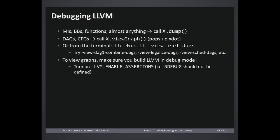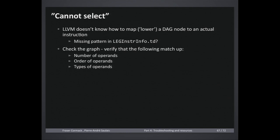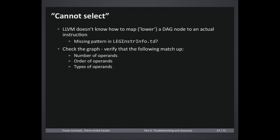A common error is 'LLVM cannot select' — LLVM doesn't know how to map a DAG node to a machine instruction. We saw this earlier when we didn't know how to select a constant. When faced with this error, check the graph: look at the node you're trying to select, its inputs and types. Something in your selection pattern or C++ logic may be wrong or mismatched — check the operands, their order, and types, and you'll probably find the issue quickly.